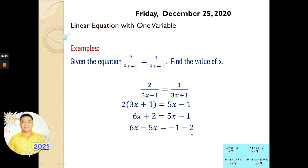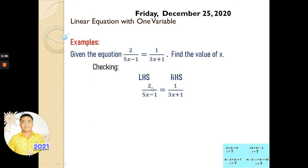So we have: 6x minus 5x equals negative 1 minus 2. Combining like terms: x equals negative 3. Therefore, the value of x is negative 3. Now we're going to check whether our answer is correct by substituting back into the original expression.